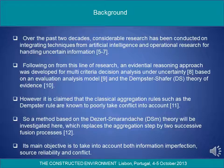However, it is claimed that the classical aggregation rules, such as the Dempster rule, are known to poorly take conflict into account. So a method based on the DSmT (Dezert-Smarandache) theory will be investigated here, which replaces the aggregation step by two successive fusion processes. Its main objective is to take into account information imperfections, source reliability and conflict.